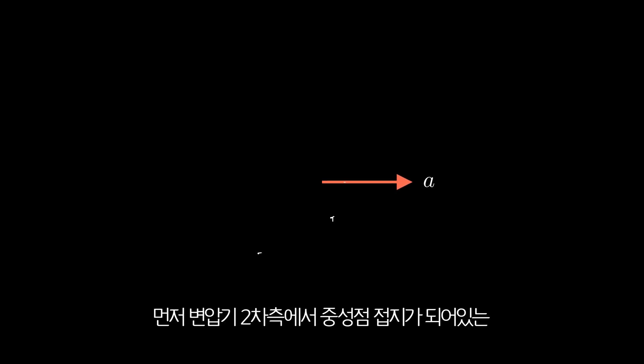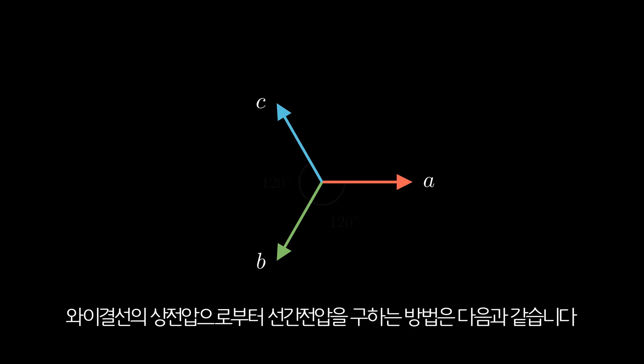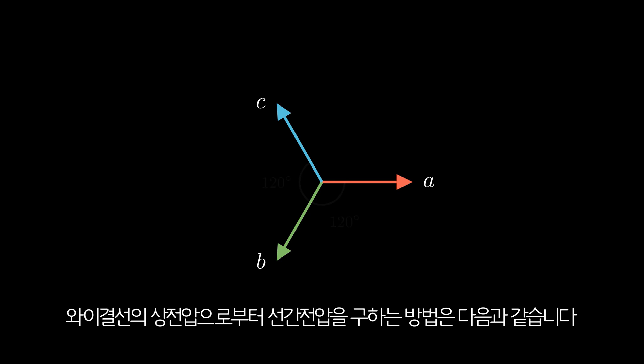First, let's look at how to calculate the line-to-line voltage from the phase voltage in a Y connection, assuming the neutral point on the secondary side of the transformer is grounded.